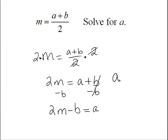Or simply put, A equals 2M minus B. And that's our answer. We've now solved for A.